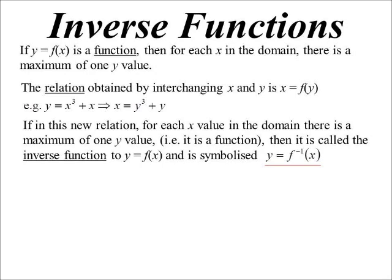In the new relation, if it satisfies the definition of a function — so for every x value in the domain there's a maximum of one y value — then we call it the inverse function. So the process is: start with a function, swap the x and y's to get an inverse relation, and if that relation satisfies the rules for a function, then we call it an inverse function.